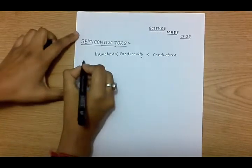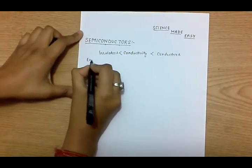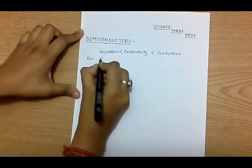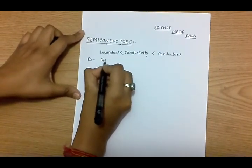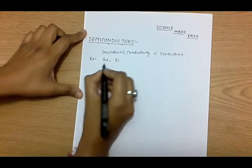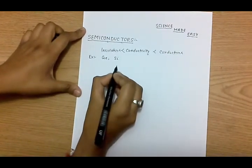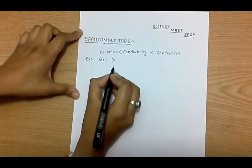A simple example of semiconductor material is germanium and silicon. Germanium has 32 electrons and silicon has 14 electrons.